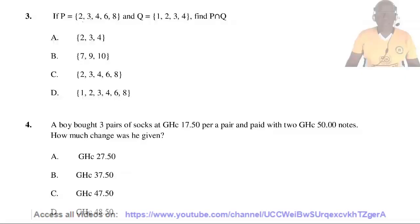Question 3. If the set P equals {2, 3, 4, 6, 8} and the set Q equals {1, 2, 3, 4}, find P intersection Q. For an element to be a member of P intersection Q, the element should be a member of P and a member of Q. So 2, 3, and 4 are members of P and members of Q. So the answer is A.